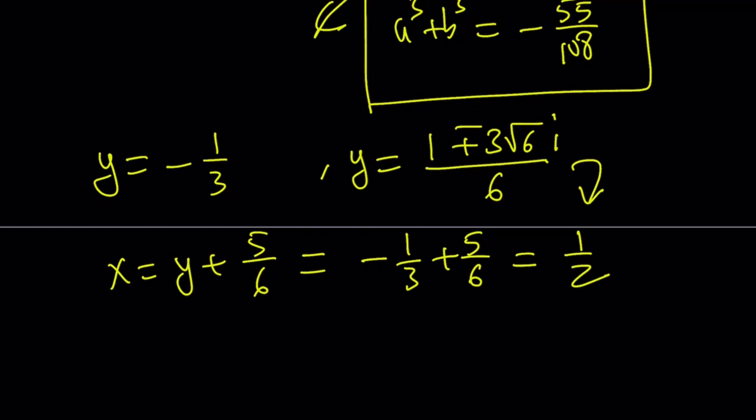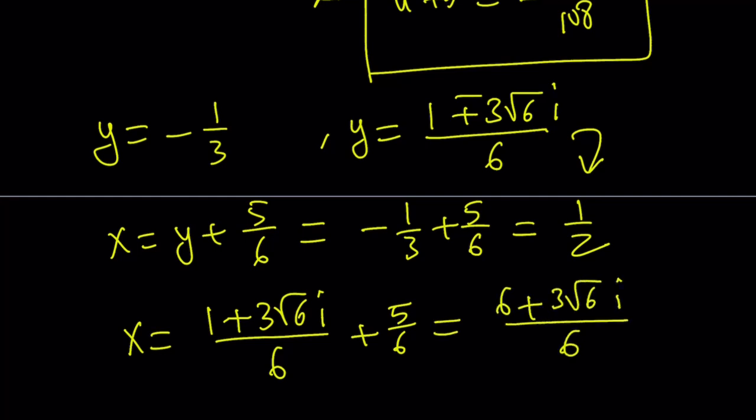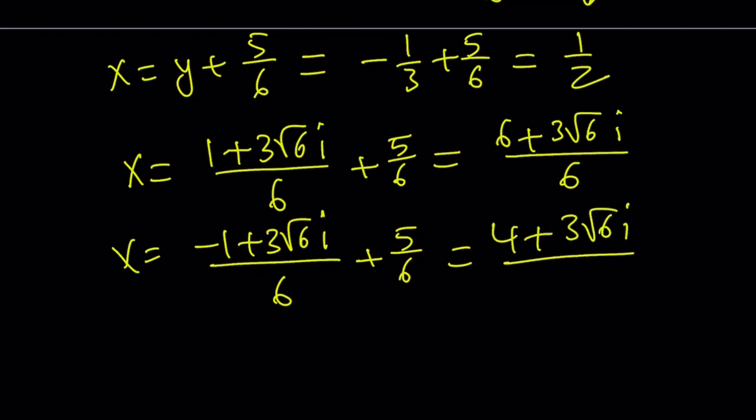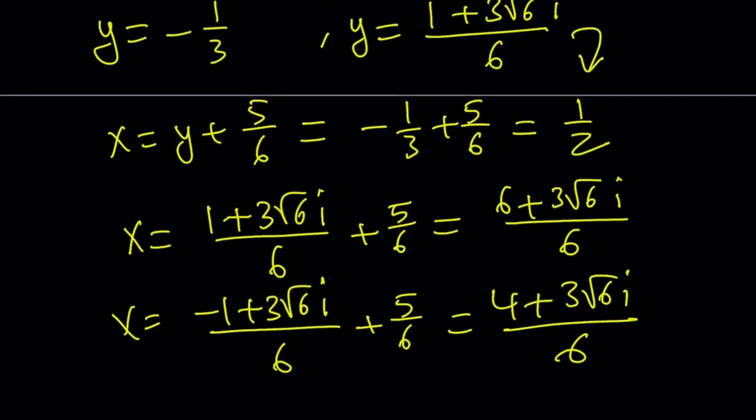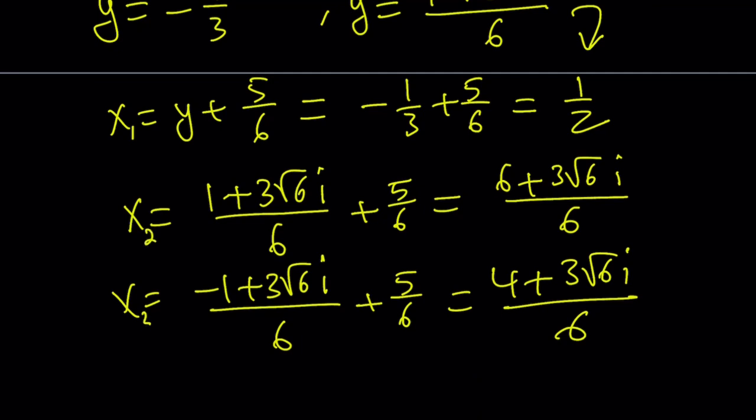Let me go ahead and show you. By replacing the y with this one, for example, let's just go with the positive 1. Just add 5 sixths to it, and you're going to get 6 plus 3 root 6i over 6 for one of two solutions. For the other one, if you replace this with negative 1 plus 3 root 6i over 6, and then just add 5 over 6 to it, that's going to give you 4 plus 3 times the square root of 6i divided by 6. So those are going to be your complex solutions. If you don't like the way of writing it this way, you can definitely call this x1, x2, and x3.